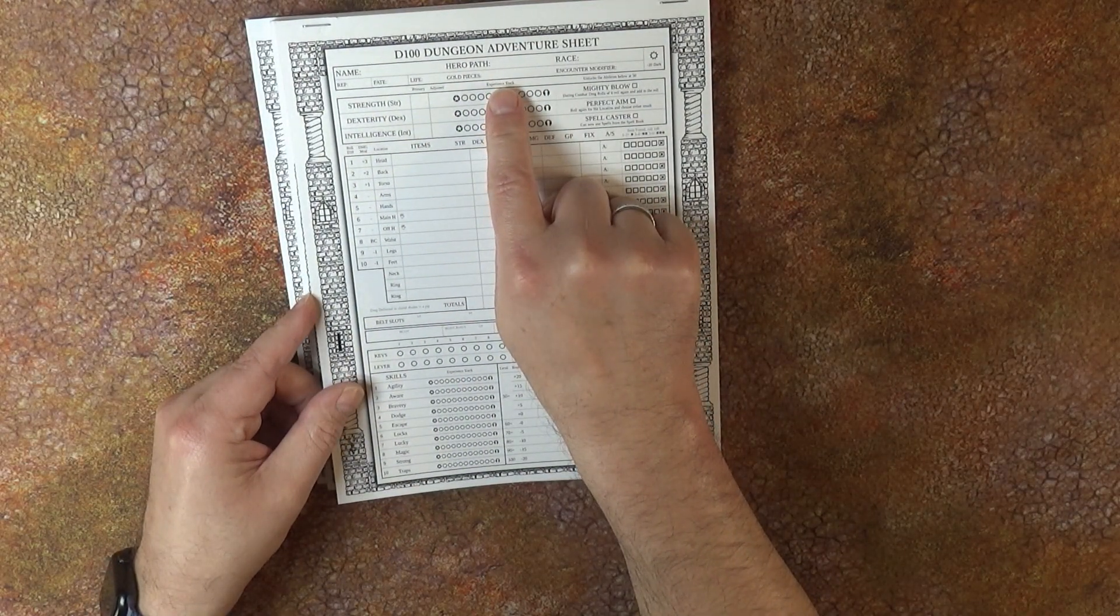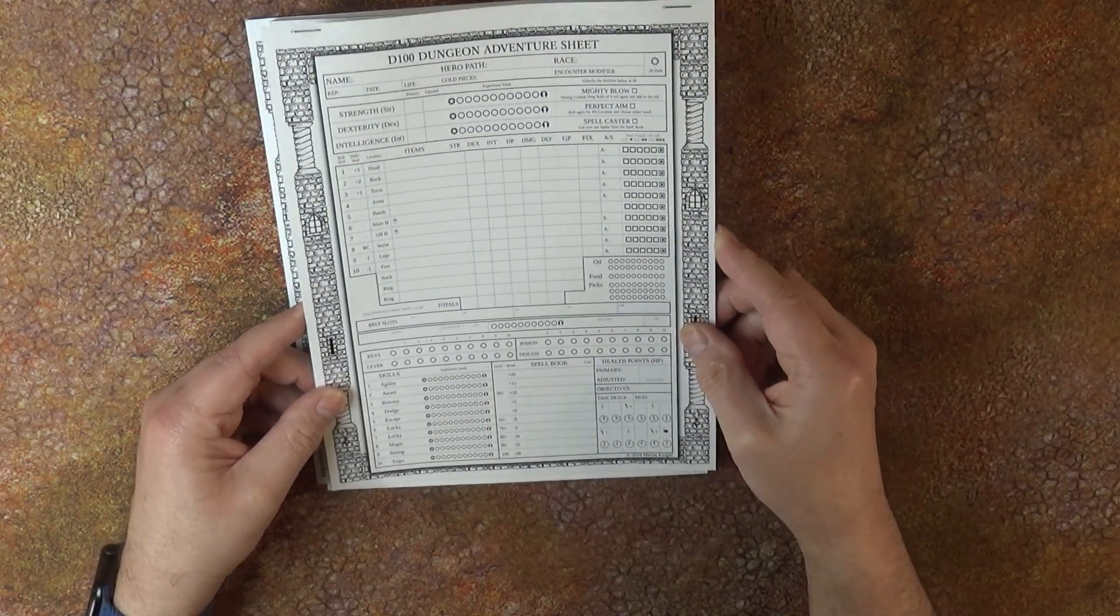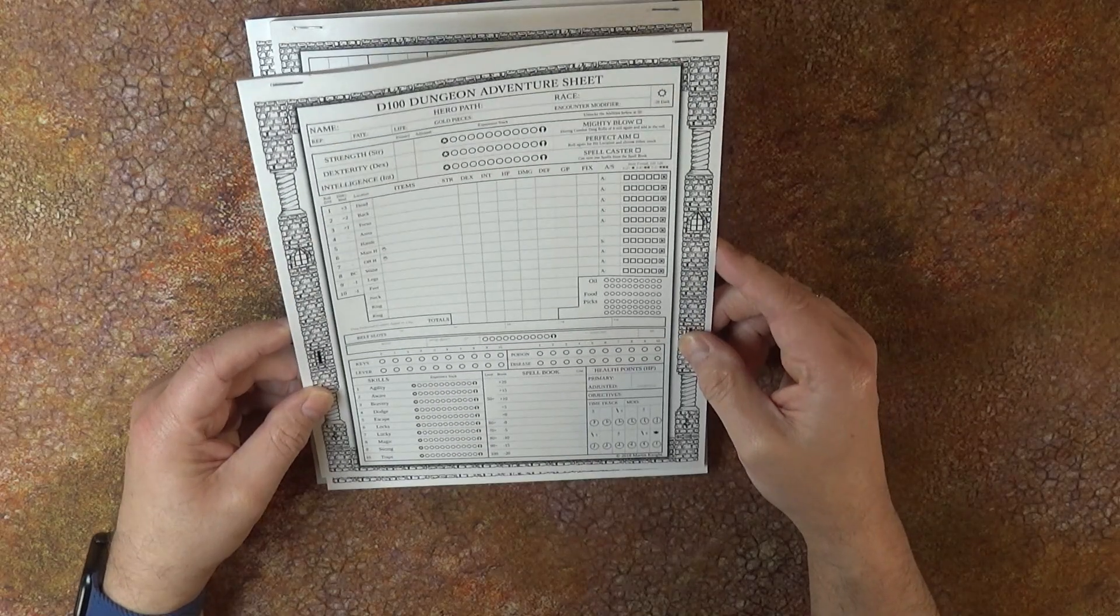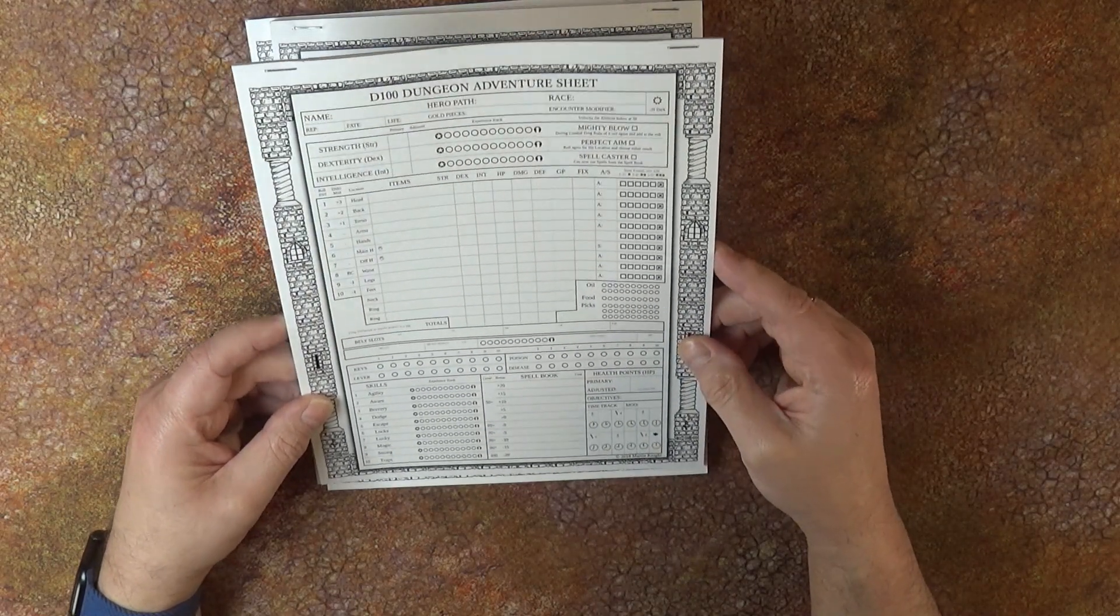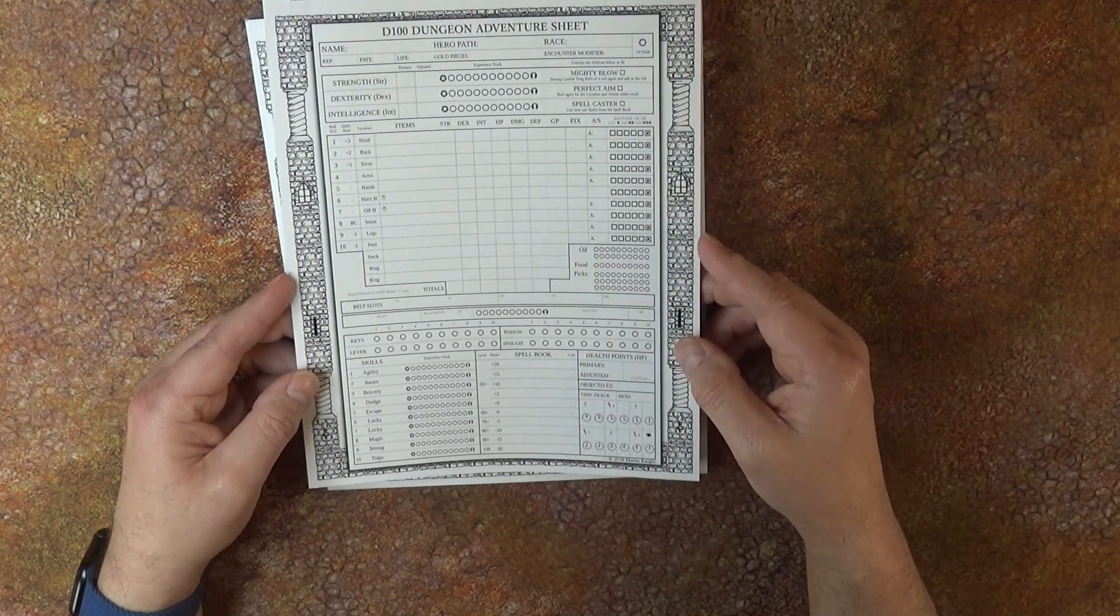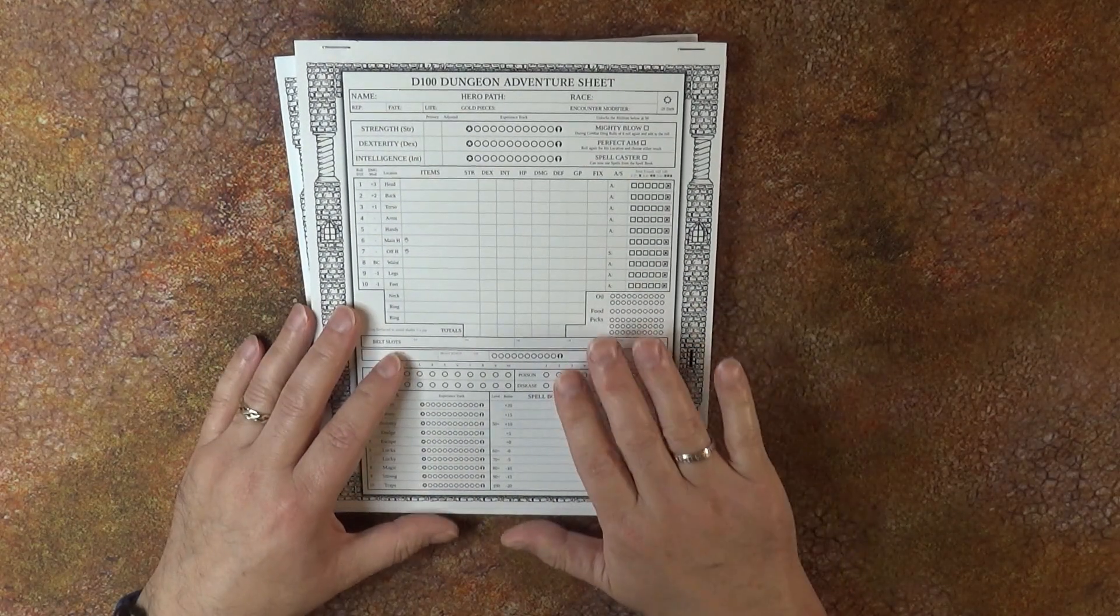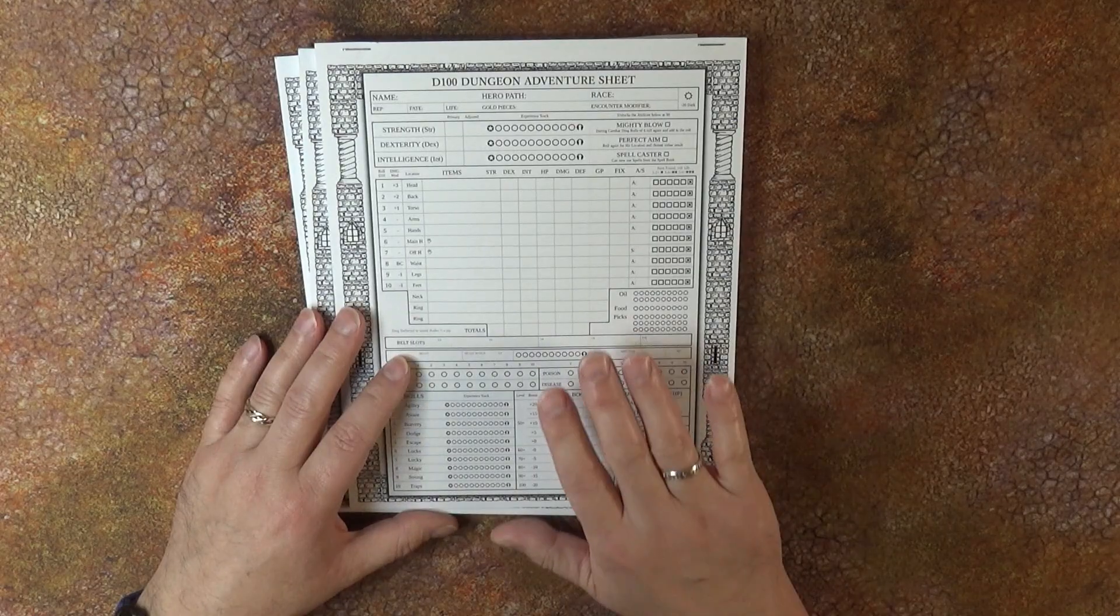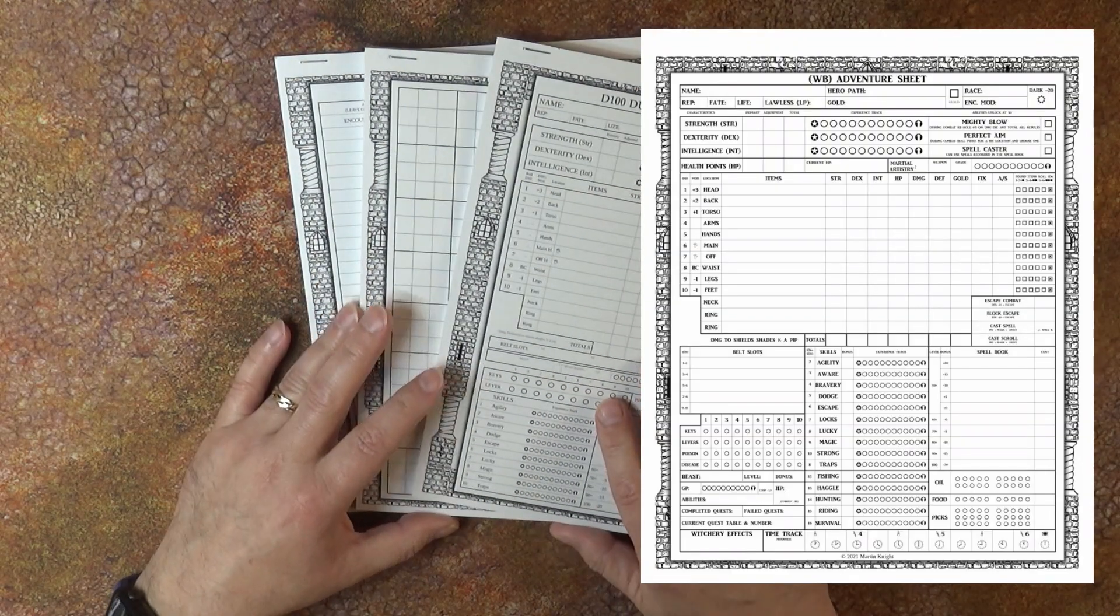And also the martial artistry, there's a place to record martial artistry on it, and witchery value, and also your beasts. So if you're using the beast rules from the Lost Tome of Extraordinary Rules, they've also been updated. You can see a bit of a preview of that if you go to the Game Crafter's website and check this pack out.